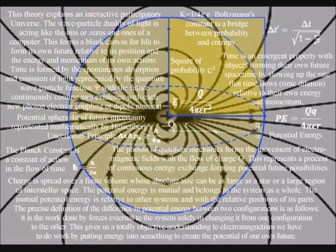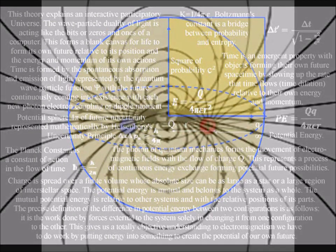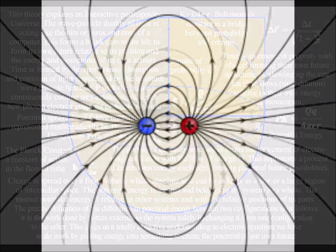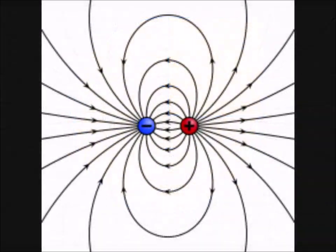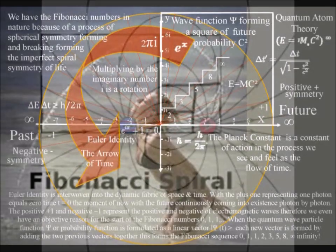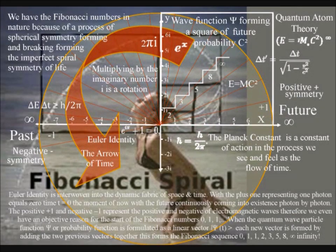The positive 1 and the negative 1 represents the positive and negative of electromagnetic waves. Therefore, we even have an objective reason for the start of the Fibonacci numbers: 0, 1, 1.